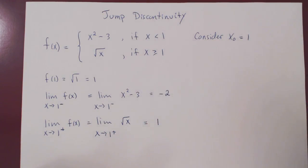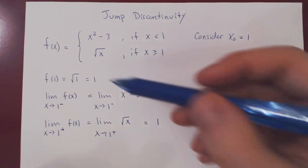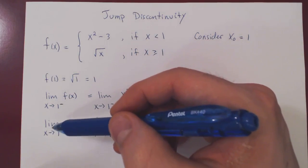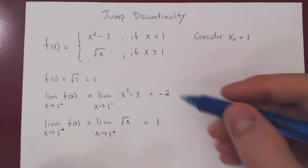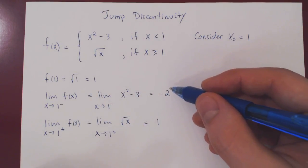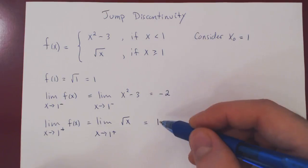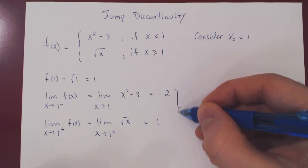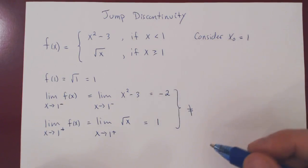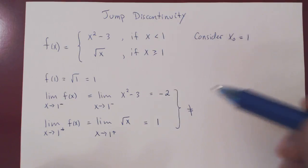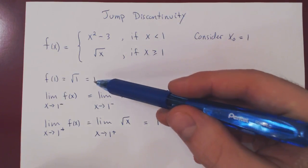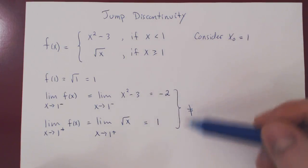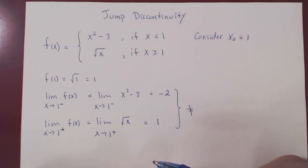What's interesting here is, if you remember, to have continuity all three quantities must exist — which they do — but they must also all be equal. The limit from the left is different from the limit from the right. This does imply discontinuity, as all three quantities are not equal. Let's see why this means a jump discontinuity, quite simply from the graph of the function.